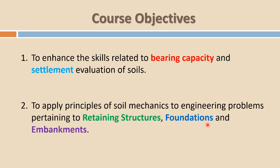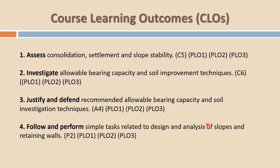The course learning outcomes of Geotechnical Design are: number one, to assess consolidation settlement and slope stability; number two, to investigate allowable bearing capacity and soil improvement techniques; number three, to justify and defend recommended allowable bearing capacity and soil investigation techniques; and number four, to follow and perform simple tasks related to design and analysis of slopes and retaining walls.